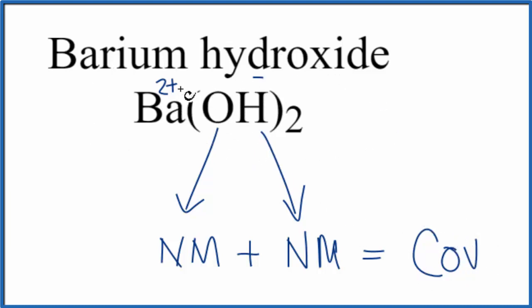But overall, between the metal and the polyatomic ion, the bond right here between the barium and each of the hydroxides, that's going to be ionic. So we call the whole thing ionic.